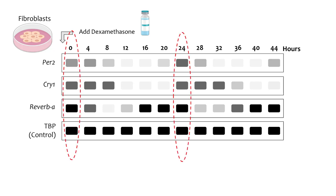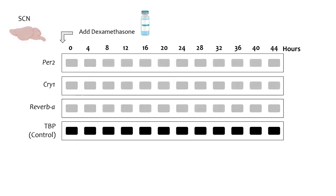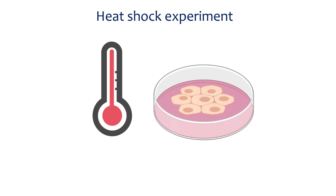Moreover, expression of clock-controlled genes such as reverb alpha also began to cycle. When the researchers tried the same experiment with SCN tissue, they discovered that dexamethasone impacts only the peripheral tissues and not the SCN. Thus, glucocorticoids are a potential way in which the SCN can synchronize peripheral clocks.